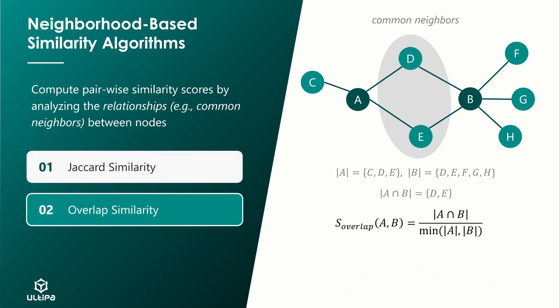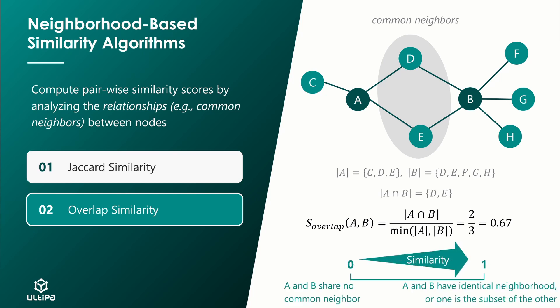Overlap similarity between set A and B is defined as the size of their intersection over the size of the smaller set. Here set A is smaller with size of 3, so their overlap similarity is 0.67. Overlap similarity also ranges from 0 to 1. 1 means that A and B have identical neighborhood, or one neighborhood is the subset of the other. This condition is relaxed as the denominator in the formula becomes the size of the smaller set rather than the union size of the two sets.